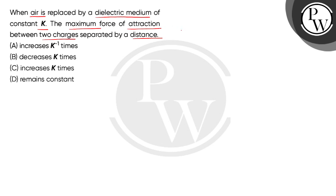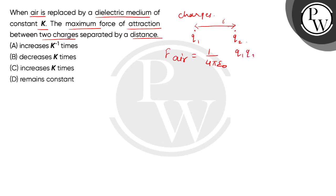We have two cases given here. In the first case, we consider two charges Q1 and Q2. The electrostatic force between them is given by Coulomb's law. Considering the distance between them, the force in air is 1 divided by 4π epsilon-0, multiplied by Q1 and Q2 divided by the square of the distance. Here epsilon-0 is the permittivity of free space.